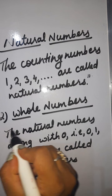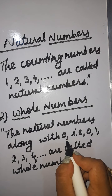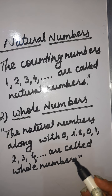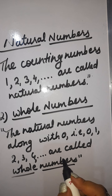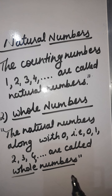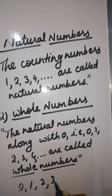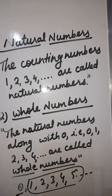Next are whole numbers. What are whole numbers? The natural numbers along with 0 are called whole numbers. When we count, we start from 1, 2, 3, 4 — we don't start from 0 in counting. But when we include 0 and start from 0, these are known as whole numbers. So natural numbers plus 0 gives us whole numbers.